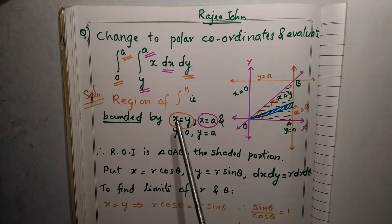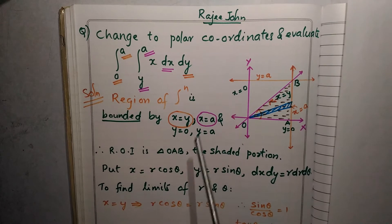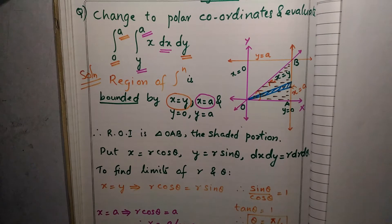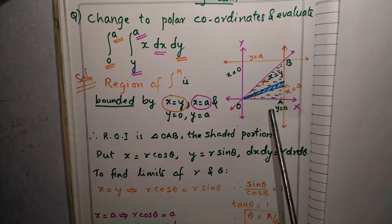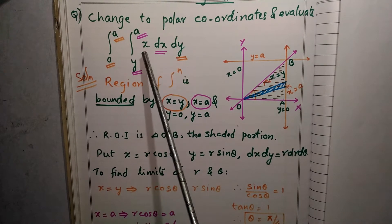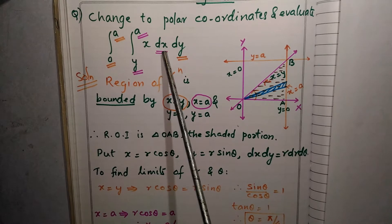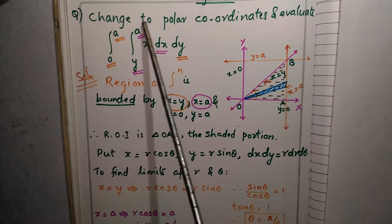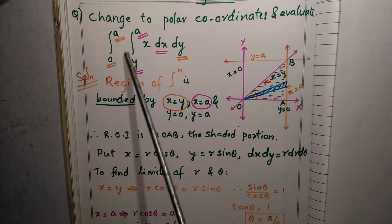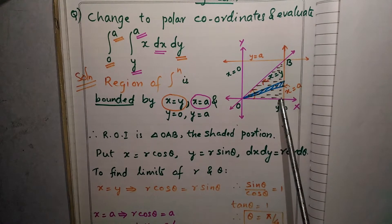To get the region of integration and to get the limits of R and theta, we need to convert all X and Y to R and theta. So for that, draw a diagram. Here, the integrand is X dx dy, so the limits of X are given for the inner integral, and the limits of Y are given for the outer integral.